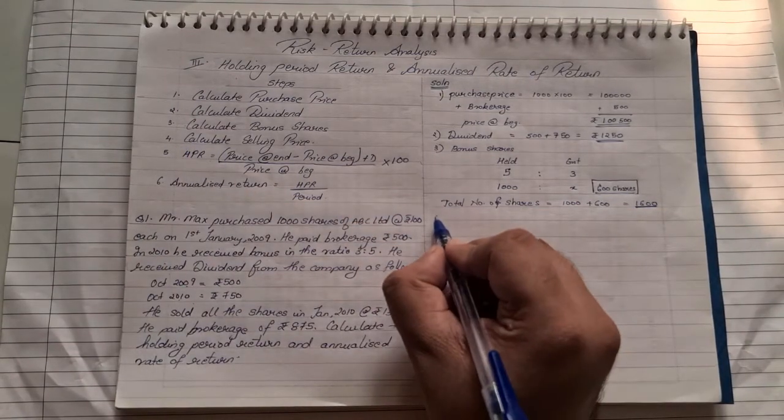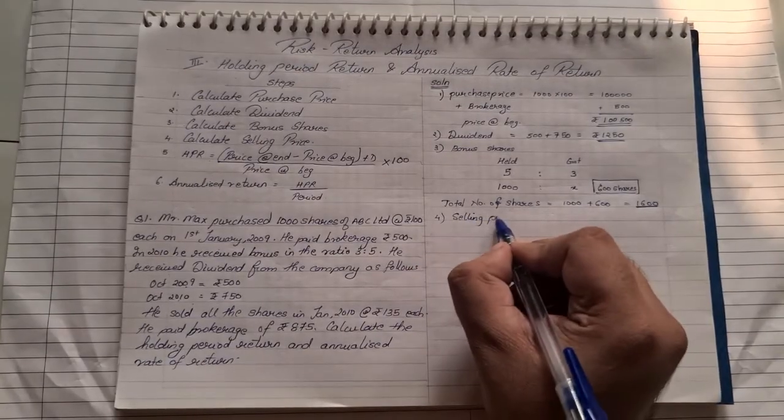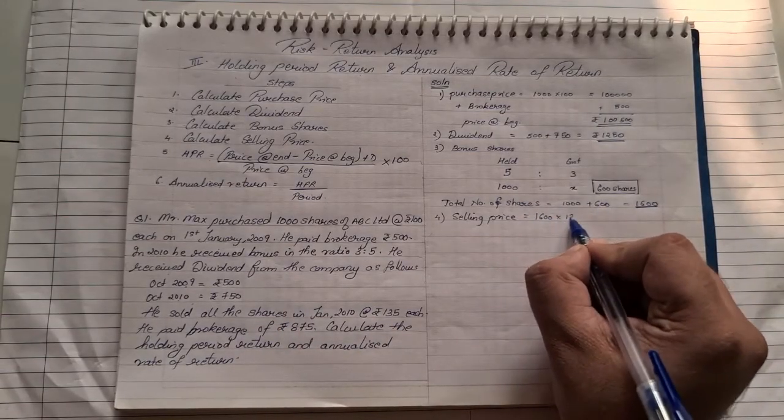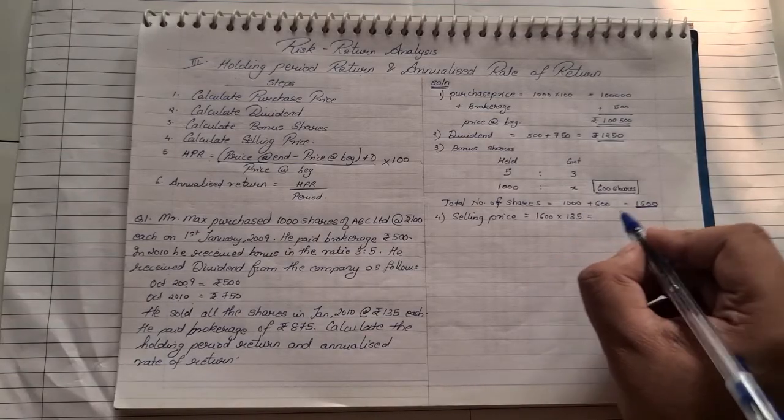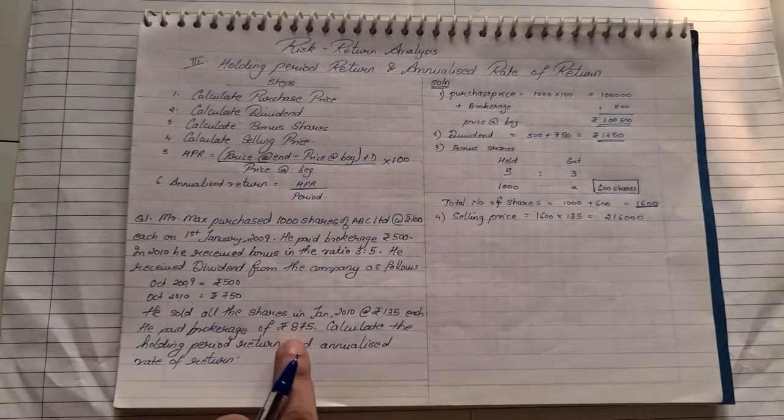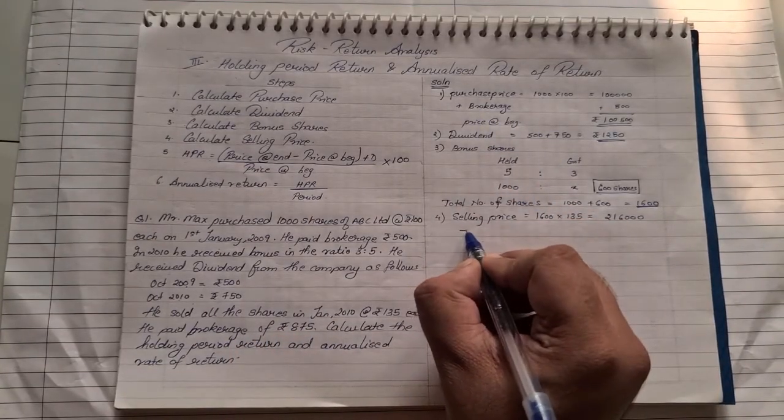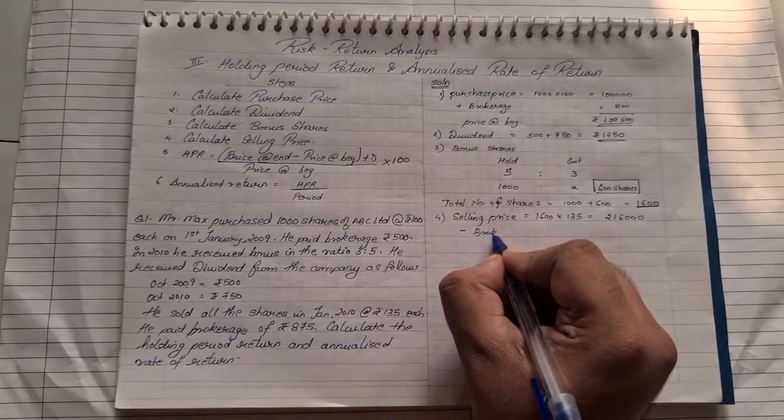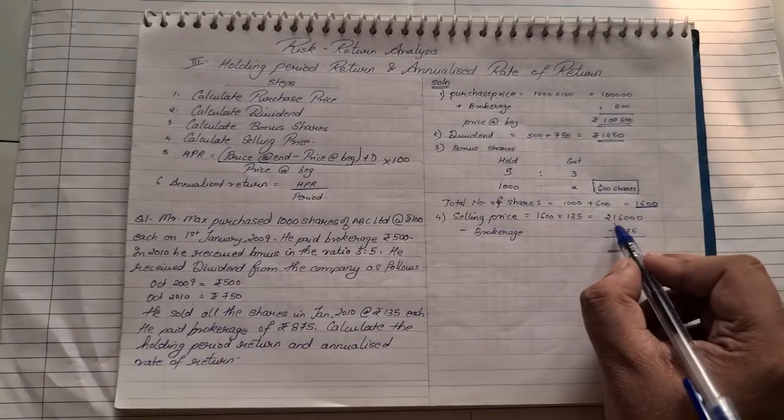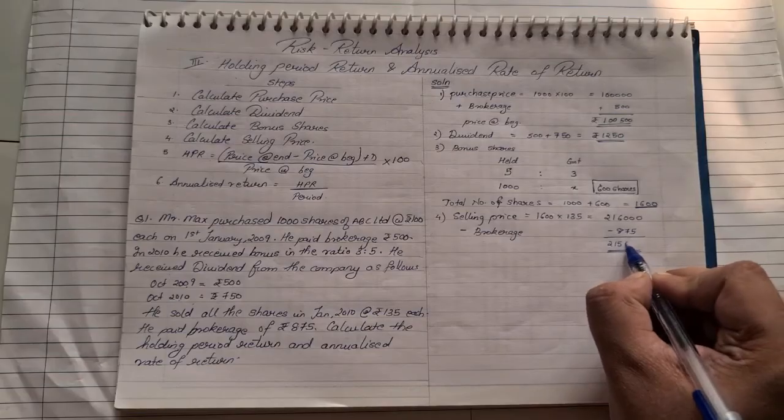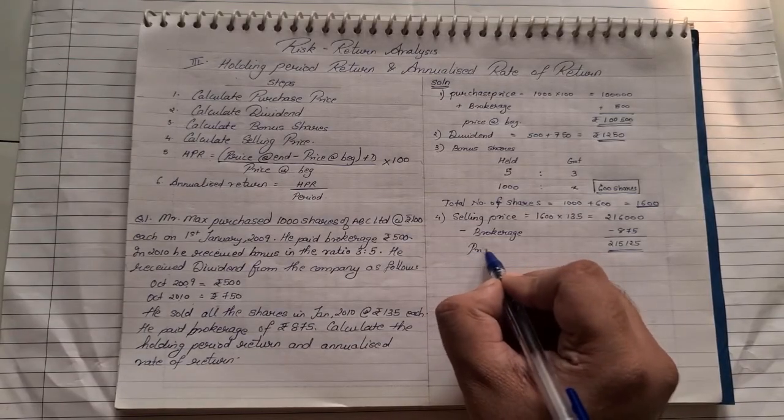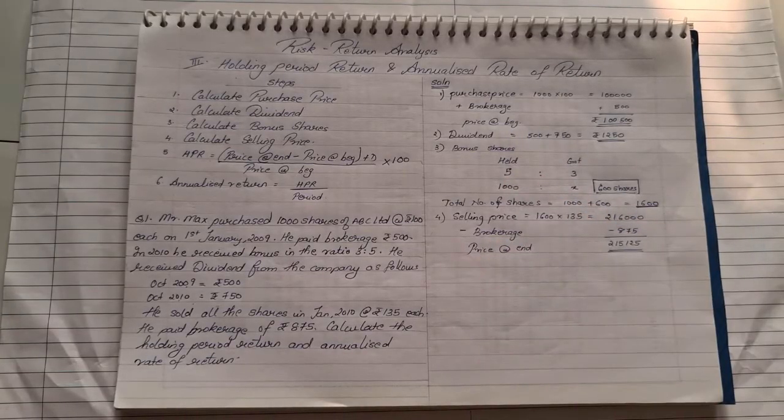The next step is now we need to calculate the selling price. So step number 4, we will find the selling price. Here they have given you, you sold all the shares for 135. Now, we have total 1600 shares and we are selling it for 135 rupees each. So 1600 into 135 that comes to approximately 2,16,000. Again, there is some brokerage which was paid. On purchase, we add brokerage. So on sale, we will have to subtract the brokerage. The brokerage value was 875. So my total selling price will be 2,16,000 minus 875 which comes to 2,15,125. This is also known as price at the end.